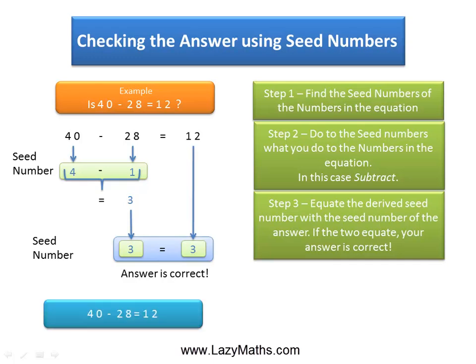So 40 minus 28 is indeed equals to 12. That's it. Thank you.